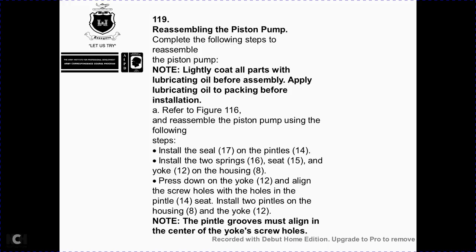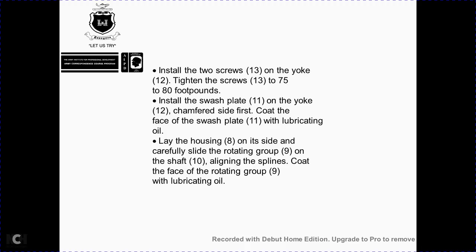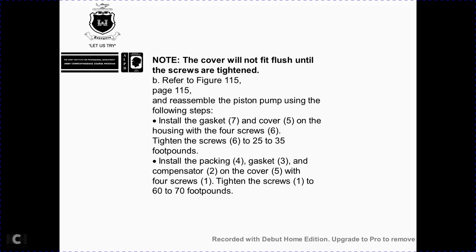Reassembling the piston pump. Lead the following steps: lightly coat all parts with lubricating oil before assembly. Install seal 17 on pin tools 14. Install two springs 16, seat 15, and yoke 12 in housing 8. Press down on yoke 12, lining the screw holes with the pin tool 14. Install two dowel pins (pencils) in housing 8 and yoke 12, grooving the muscle line with the center of yoke 12 screw holes. Install two screws 13 on yoke 12 and tighten screws 13 to 70–80 foot-pounds. Install swash plate 11 on yoke 12 with chamfer side first. Lubricate swash plate 11 face with lubricating oil. Carefully slide the rotating group 9 onto shaft 10 with spindles coated. Coat the face of the rotating group with lubricating oil. Note: the cover face will not be flushing until the screws are tightened.